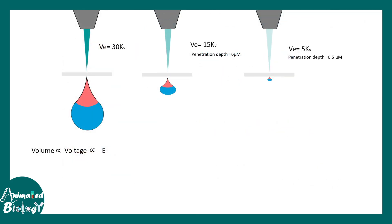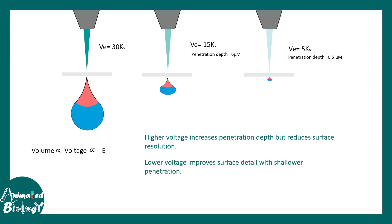Depending on the acceleration voltage of the electrons, the volume of imaging and the penetration depth vary. At 15 kV the penetration depth is about 6 microns, whereas at 5 kV it becomes about 0.5 microns. So: higher voltage increases penetration depth but reduces surface resolution, while lower voltage improves surface detail and gives shallower penetration. What we choose really depends on what we are trying to image.